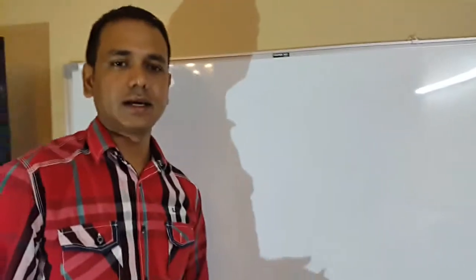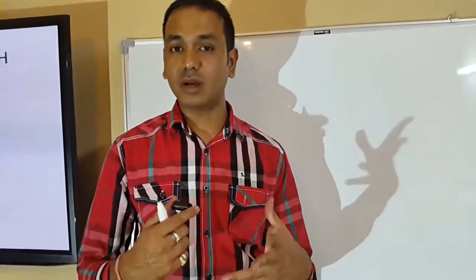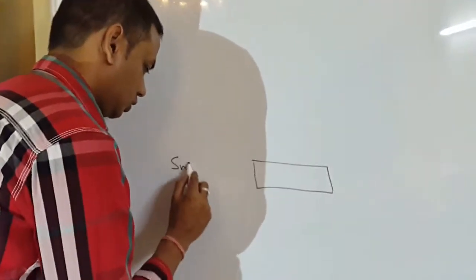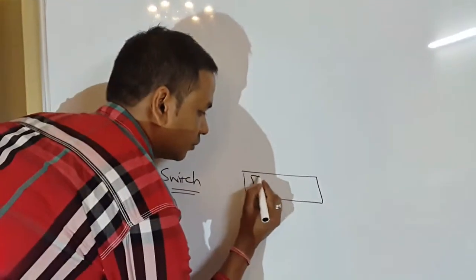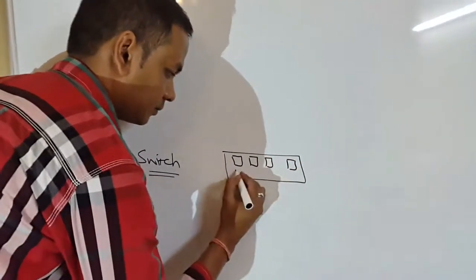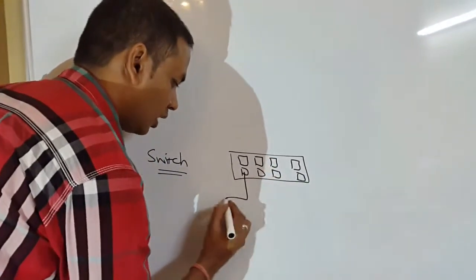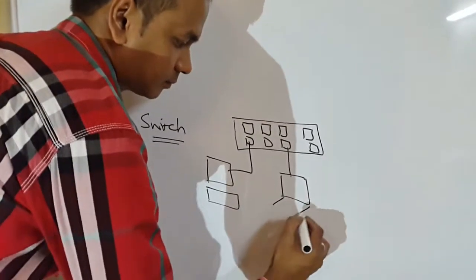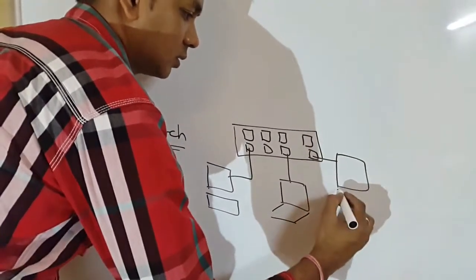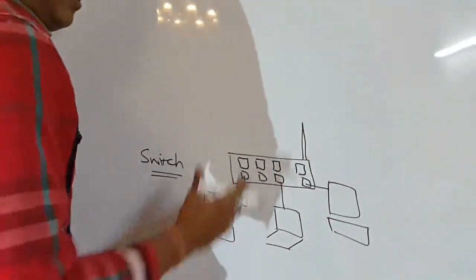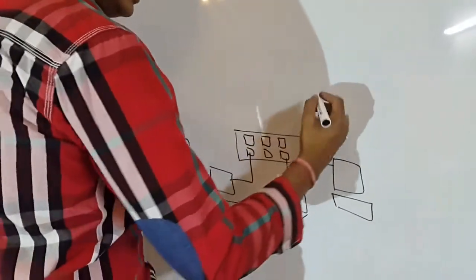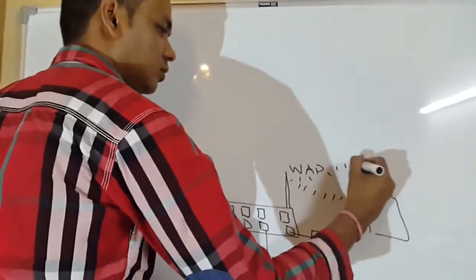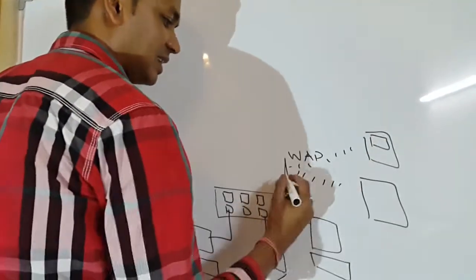Before I go into IP addressing, you need to understand the different networking devices. Consider your home — you have a switch, for example an eight-port switch. From that switch you have a PC, a laptop, another PC, and the switch also has a wireless antenna serving as a wireless access point, so I have connected my tablet and my phones.